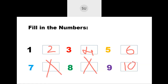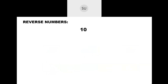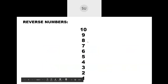So we have 1, 2, 3, 4, 5, 6, 7, 8, 9, 10. Now let's see how to read numbers in reverse order. We have 10, 9, 8, 7, 6, 5, 4, 3, 2 and 1.